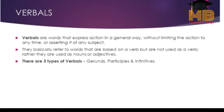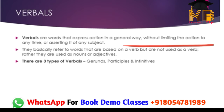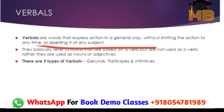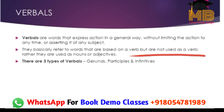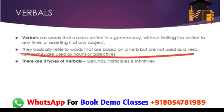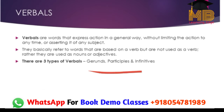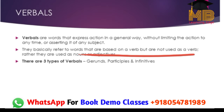So what are verbals? Verbals are words that express the action in a general way without limiting the action to any time or asserting it to a specific object. They are words that are based on a verb but are not used as a verb — they are used as nouns or adjectives. We have three types of verbals: gerunds, participles, and infinitives.